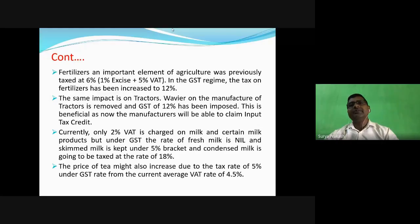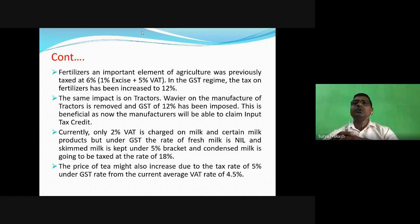Fertilizers also play a very significant role in cultivation. Fertilizers, an important element of agriculture, were previously taxed at six percent - one percent excise plus five percent VAT. Under the GST tax regime, the tax on fertilizers has been increased to 12 percent. This gap of six percent will ultimately boost farmers to use manual or traditional manure, which promotes green and hygienic agricultural products, motivating farmers to use organic inputs.